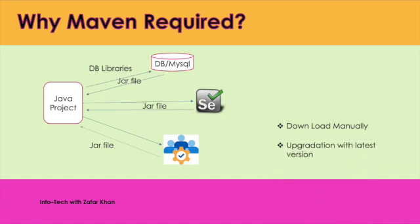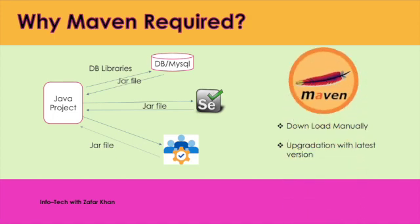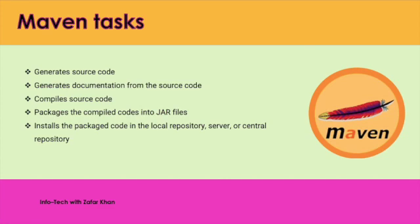To avoid this problem we have something called the Maven tool. There are some tasks performed by Maven: Maven generates the source code, it generates documentation from the source code, compiles the source code, packages the compiled code into a JAR file, installs the packaged code in the local repository, server, or central repository. We can easily build a project using Maven, we can add JARs and other dependencies of the project easily. Maven provides project information such as log documents, dependency lists, unit test reports, etc.